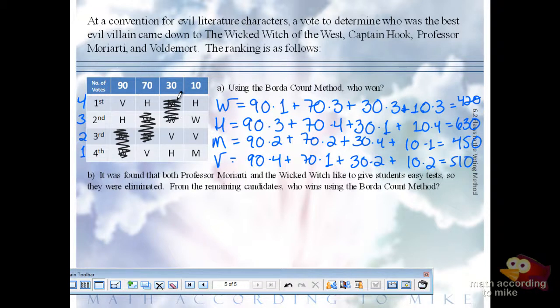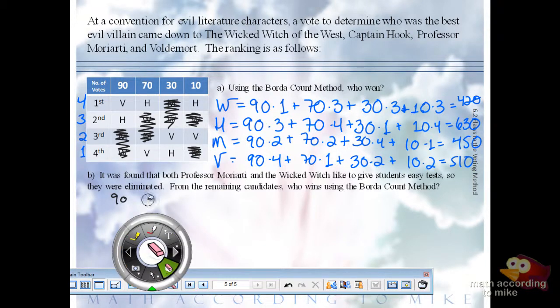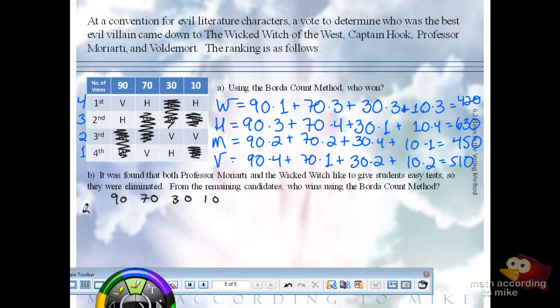Moriarty and the Wicked Witch are gone. If we need to, let's really quickly redraw this. The two and the one are the points off to the side. We have some repeats. We could put some columns together if we really wanted to, but it's not too much more work.